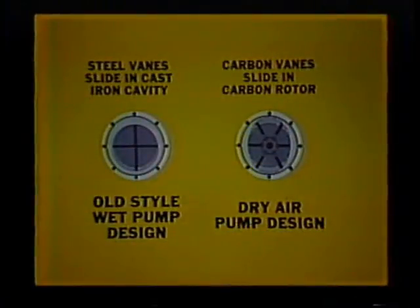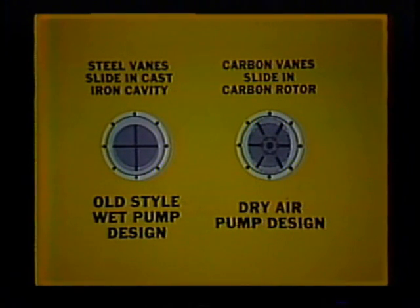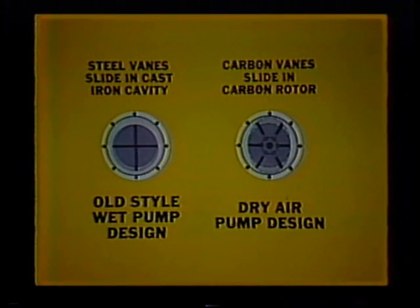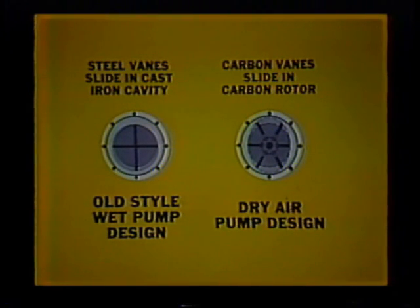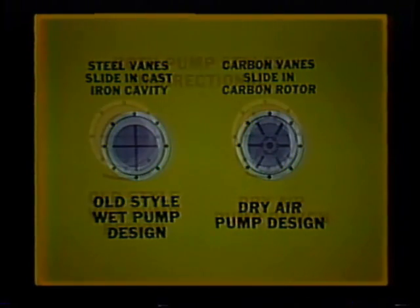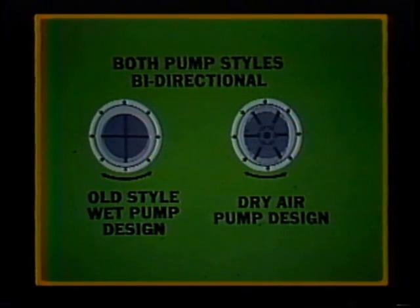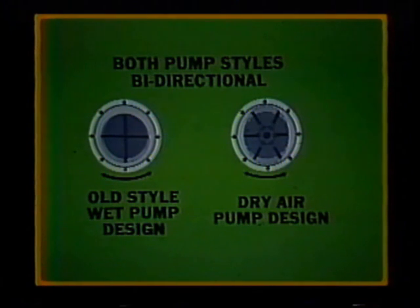This new generation of dry air pumps eliminates the need for external oil separation devices. And rather than using steel vanes that rotate inside a cast iron cavity, these pumps employ carbon vanes sliding in a carbon rotor. These vanes wear constantly in microscopic amounts to produce the lubrication required. Many of these dry air pumps are bi-directional, meaning they can be operated either clockwise or counterclockwise.